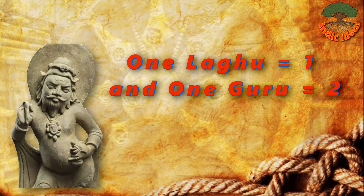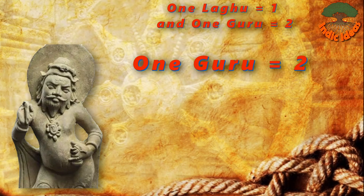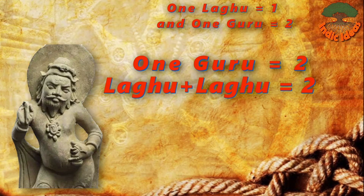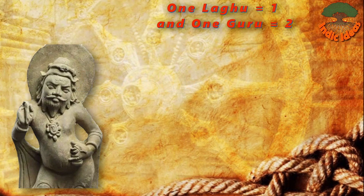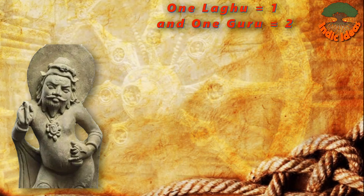In one beat, we can have just one lagu. If we need two beats, we can make the following combinations: one guru, or two lagus — giving us two combinations. For three beats, we can have: one lagu and one guru, one guru and one lagu, or three lagus — giving us three combinations. Here we conclude with three beats and three combinations.